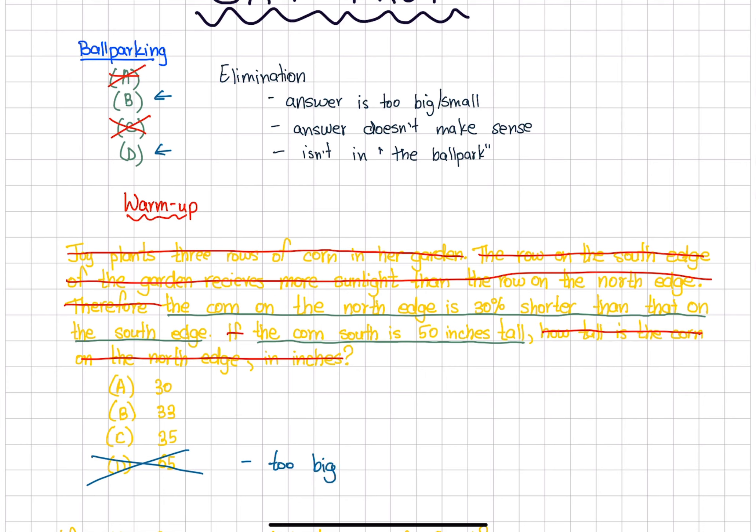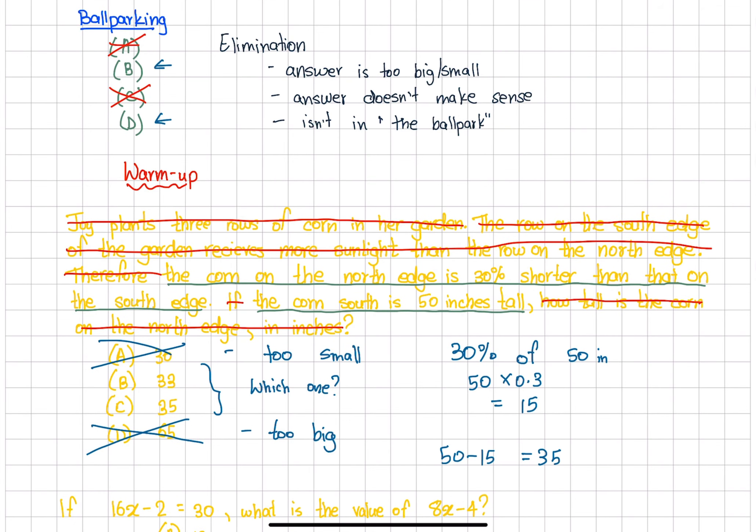30 seems way too small because that's 60% of 50 inches. Now we have these two left, so which one is the answer? Let's perform the final operation. We need to find 30% of 50 inches. 50 times 0.3 gives us 15, so 50 minus 15 gives us 35. The answer is C.